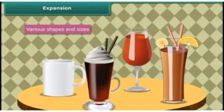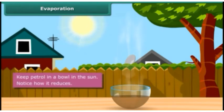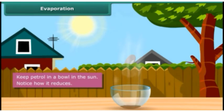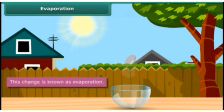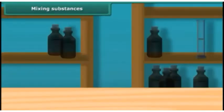What happens when you keep some petrol in a bowl in the sun? After some time you see that the petrol starts reducing. This is an example of a change known as evaporation.